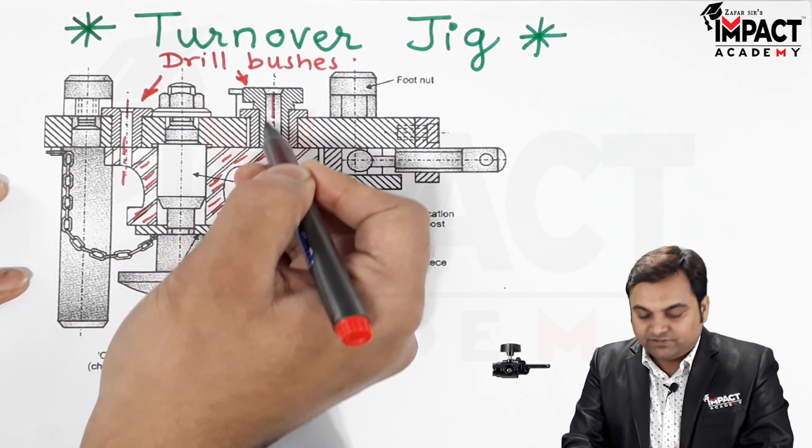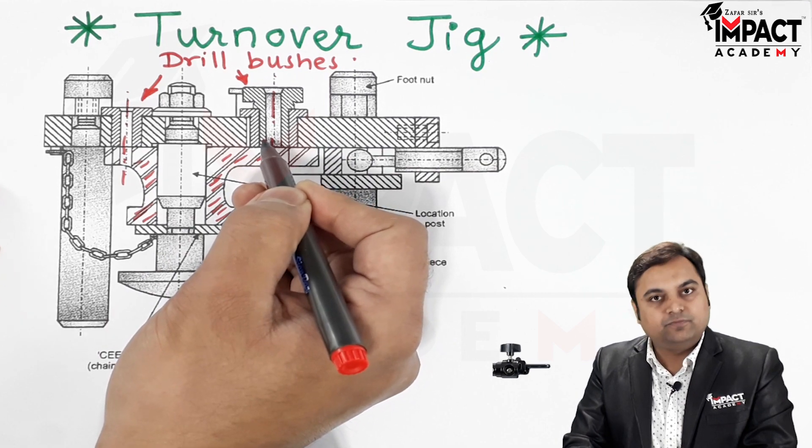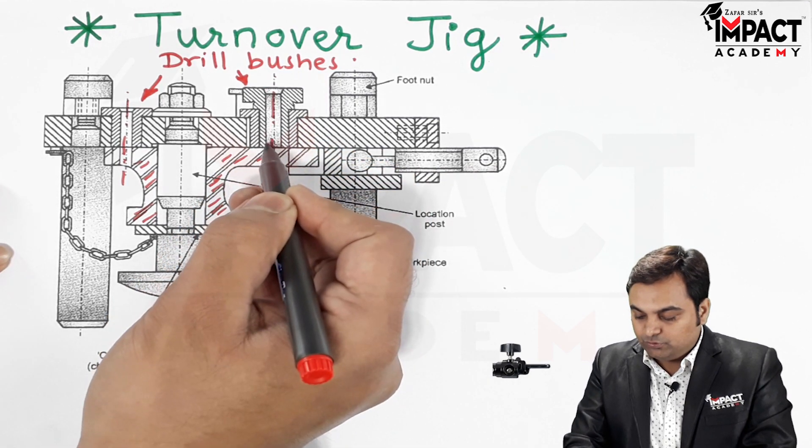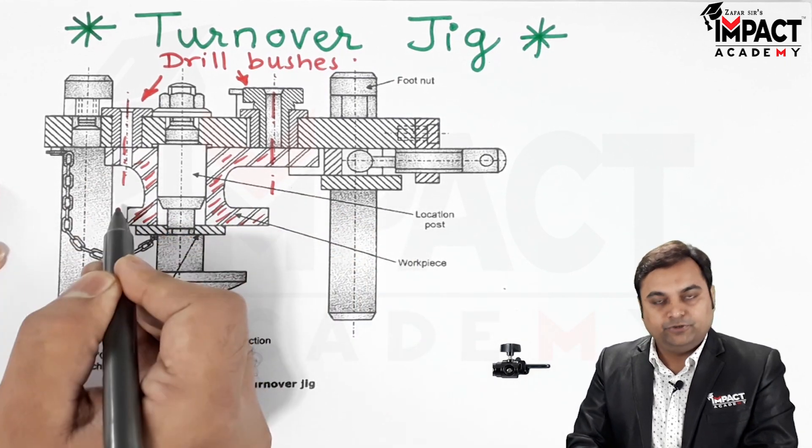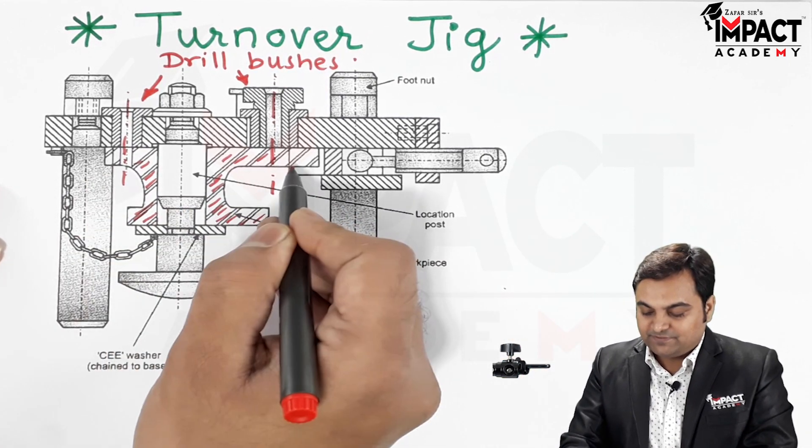Once it has been located and clamped, then the drill would enter the drill bushes and the drill bushes are going to guide the drill. That is the function of the drill bushes: to guide the drill into the workpiece. Then the required number of holes are produced.